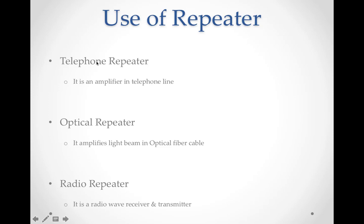Uses of repeater: first is the telephone repeater — it is an amplifier used in telephone lines. Second is the optical repeater — it amplifies a light beam in an optical fiber cable, kyunki optical fiber cable mein light beam hoti hai. Third is the radio repeater — it is a radio wave receiver and transmitter. So teen tarike se repeater ko use kiya jata hai.